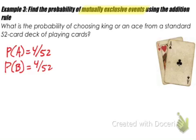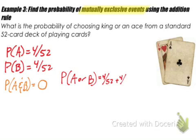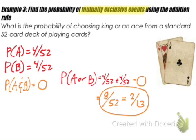That can't happen, because you can't choose a king and an ace simultaneously — you're only choosing one card. You can choose a king or you can choose an ace, but you can never choose a king-ace because that doesn't exist. So the probability of choosing a king and an ace is 0, since they are completely different face cards. These two events are mutually exclusive. The probability of choosing a king or an ace is 4/52 plus 4/52 minus 0, which equals 8/52, simplified to 2/13.